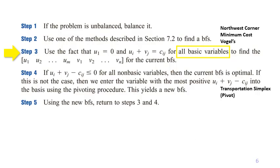In step three, for all basic variables you need to find the u and the v using the fact that u1 equals zero and ui plus vj equals cij. We are going to use the table.